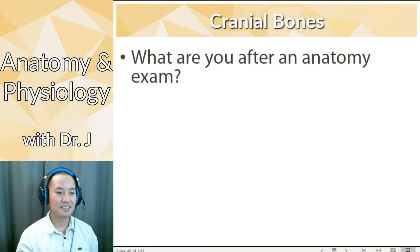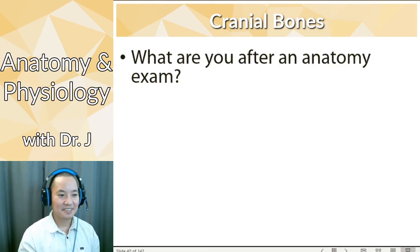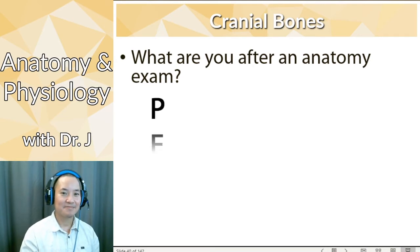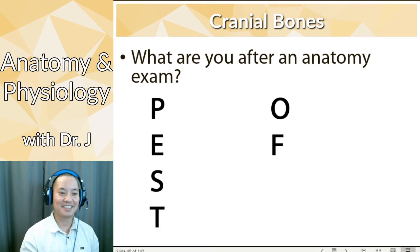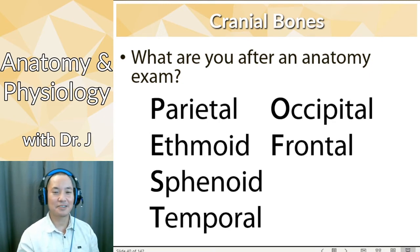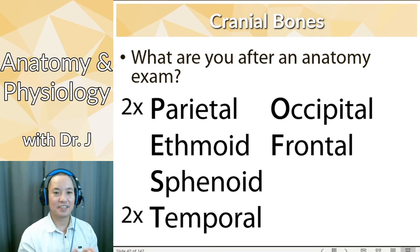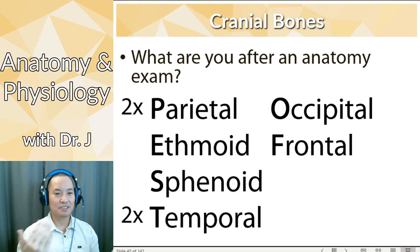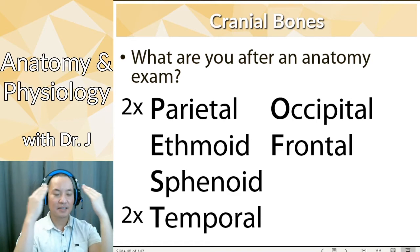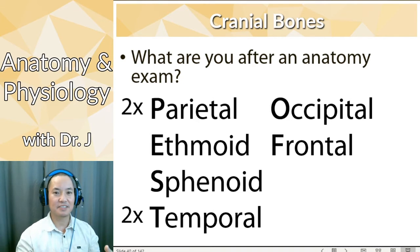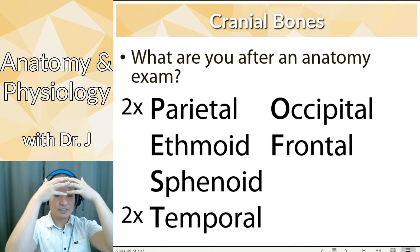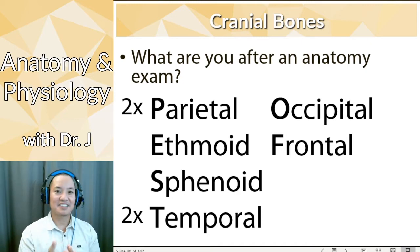Now your cranial bones — what are you after an anatomy exam? You are probably PISSED OFF. It's not a typo — this is a mnemonic telling you what your cranial bones are: Parietal, ethmoid, sphenoid, temporal, occipital, and frontal bones. You have two pairs in an adult: two parietal and two temporal. But occipital, frontal, ethmoid, and sphenoid — you only have one fully formed bone each in adults. Your frontal bones fuse during development, so in a fully formed adult you just have one frontal bone.